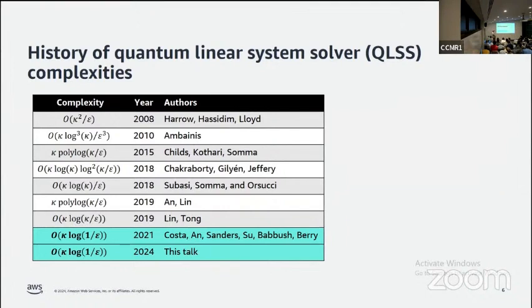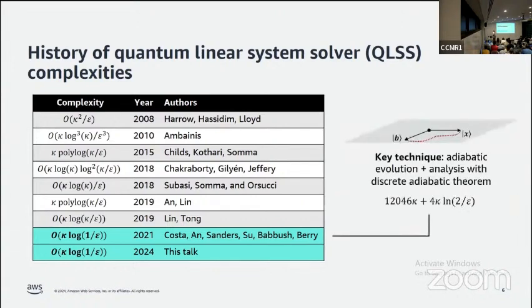Over the course of many years this was incrementally improved to the point where in 2021 we achieved optimal complexity of κ log(1/ε). It's worth lingering on how this work and prior work actually make this happen. In particular, they prepare the state |x⟩ by following an adiabatic path from a simpler state that's easy to prepare, which is related to |b⟩.